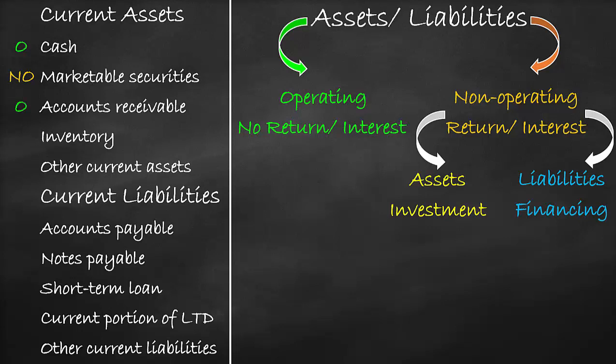Inventory means the company has raw materials, works in progress, or finished goods. The company does not receive any interest on the inventory. Therefore, inventory is an operating current asset. Other current assets mean the company owns short-term assets used in operations that have a small value, and that's why we gather them together under other current assets. The company does not receive any interest on other current assets. Therefore, other current assets includes operating current assets.